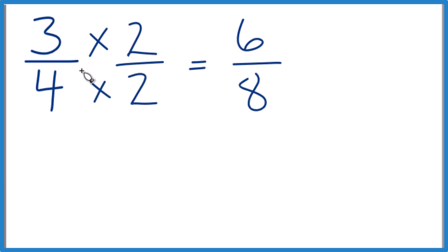First I multiplied the numerator and the denominator by 2. 2 times 3 is 6, 2 times 4 is 8, 6 eighths. Three-fourths and 6 eighths are equivalent fractions. Divide 3 by 4, 6 by 8, you get the same thing, 0.75.